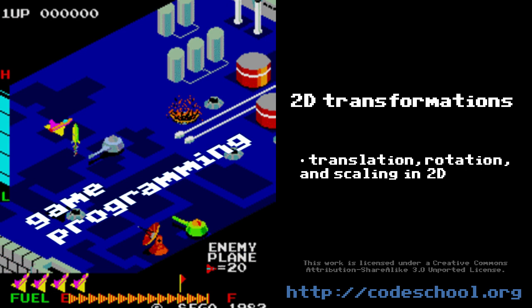The act of moving an object in 2D or 3D space is called a transformation. It's an umbrella term that covers translation, rotation, and scaling.